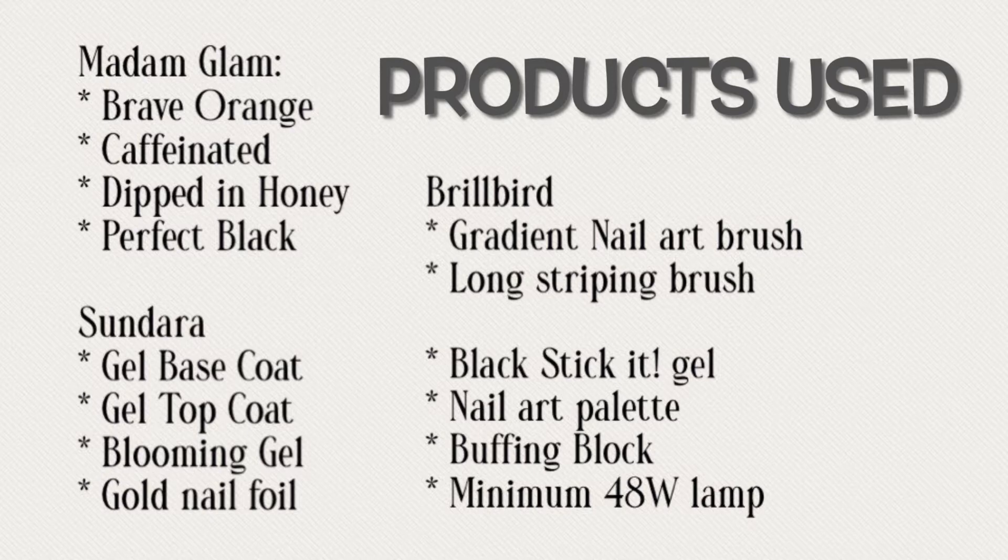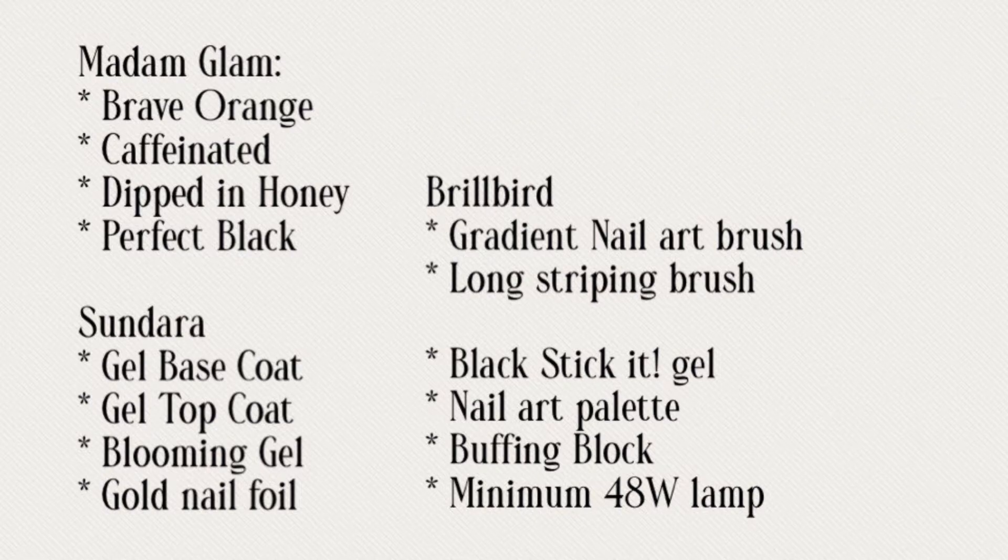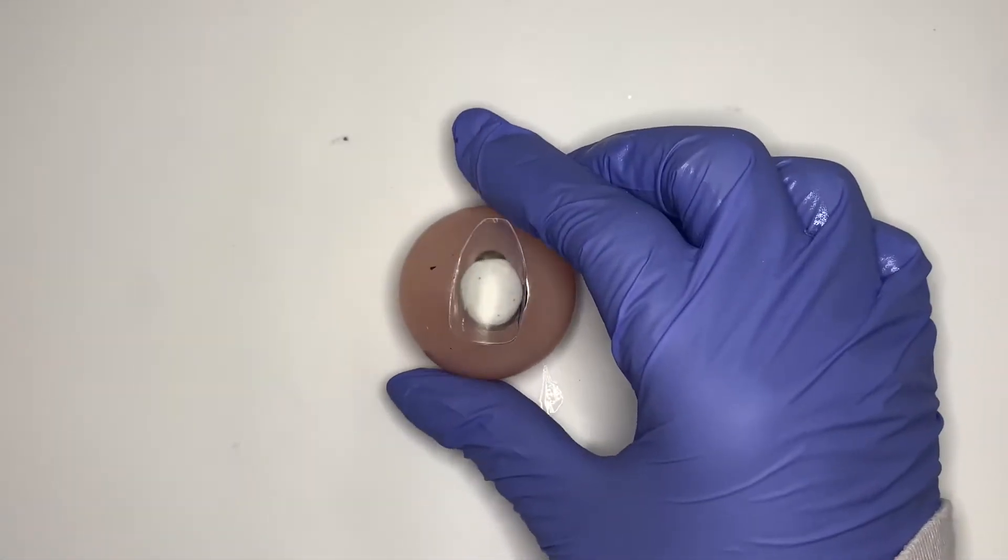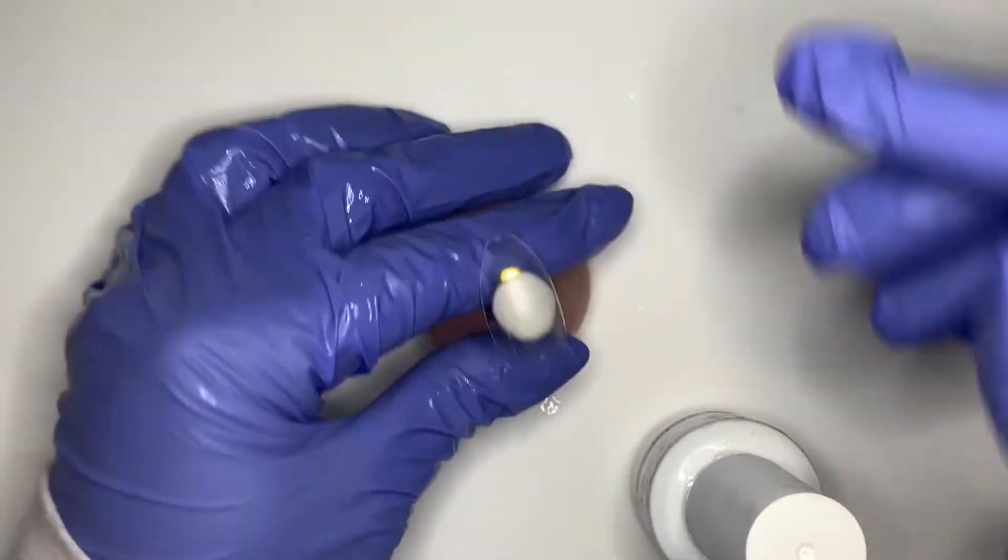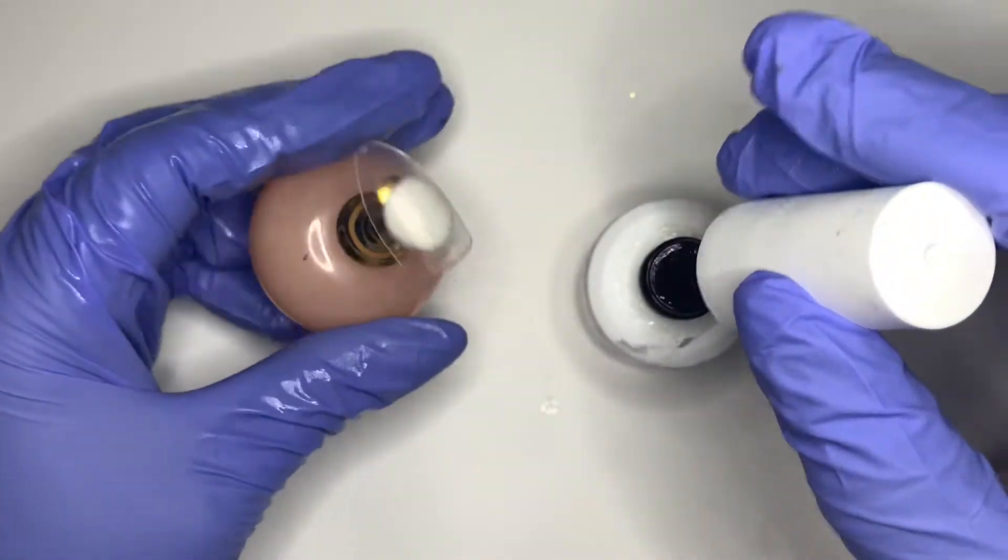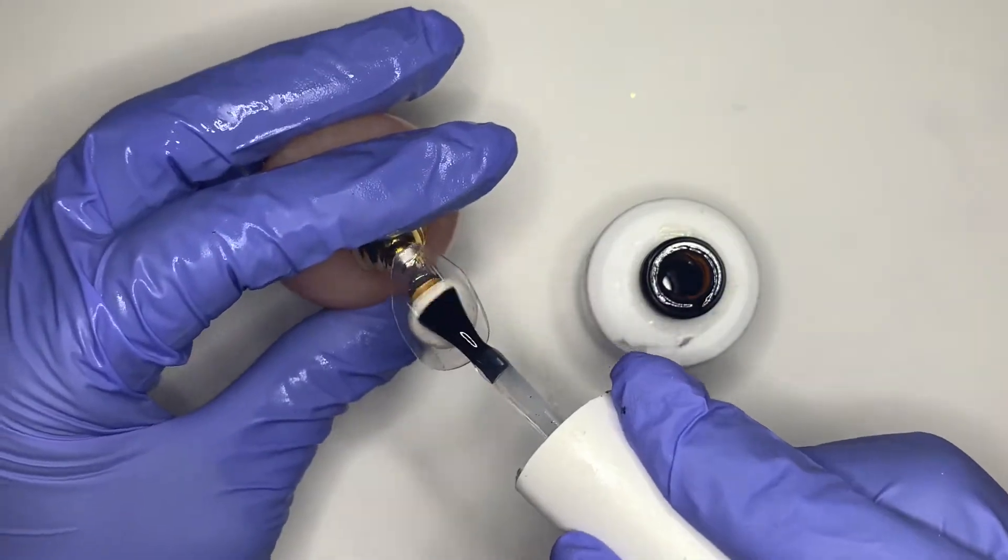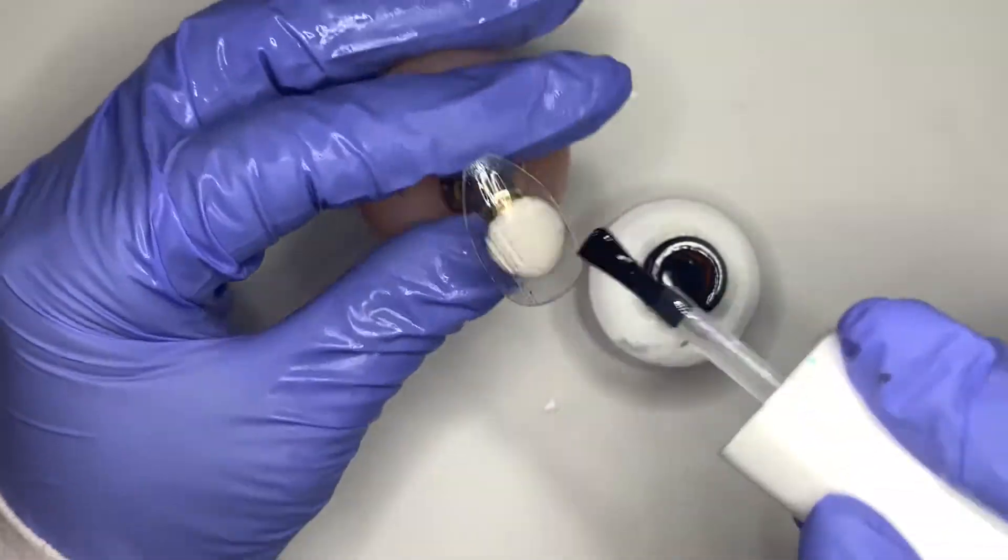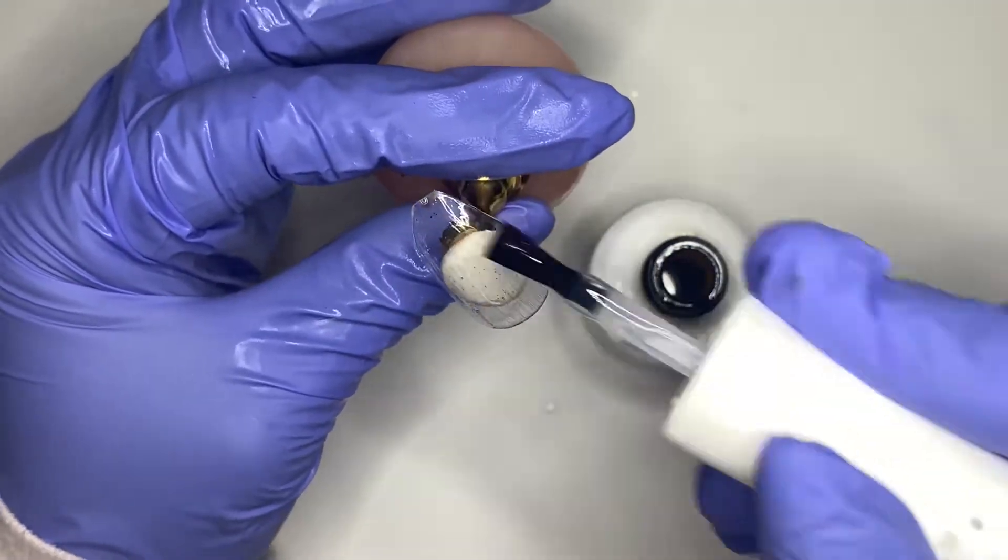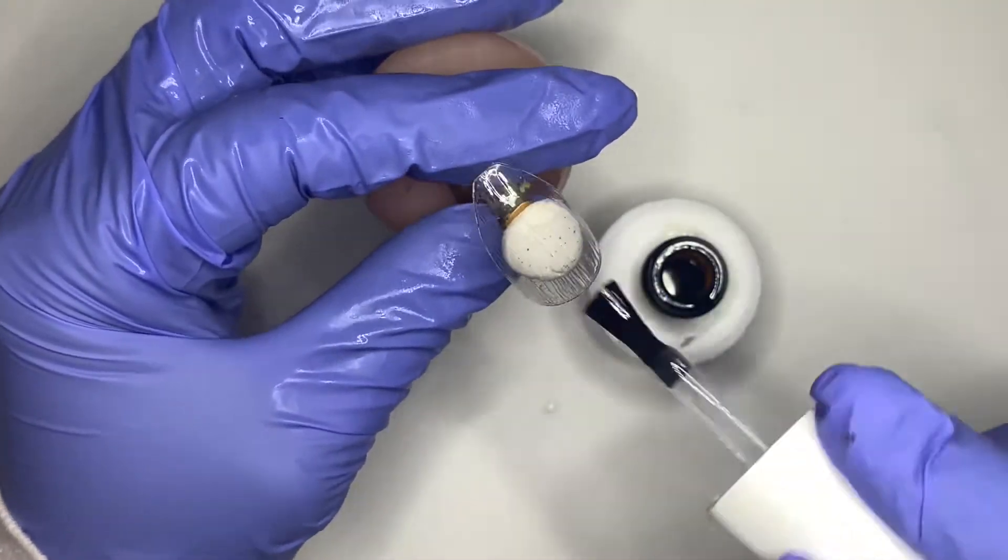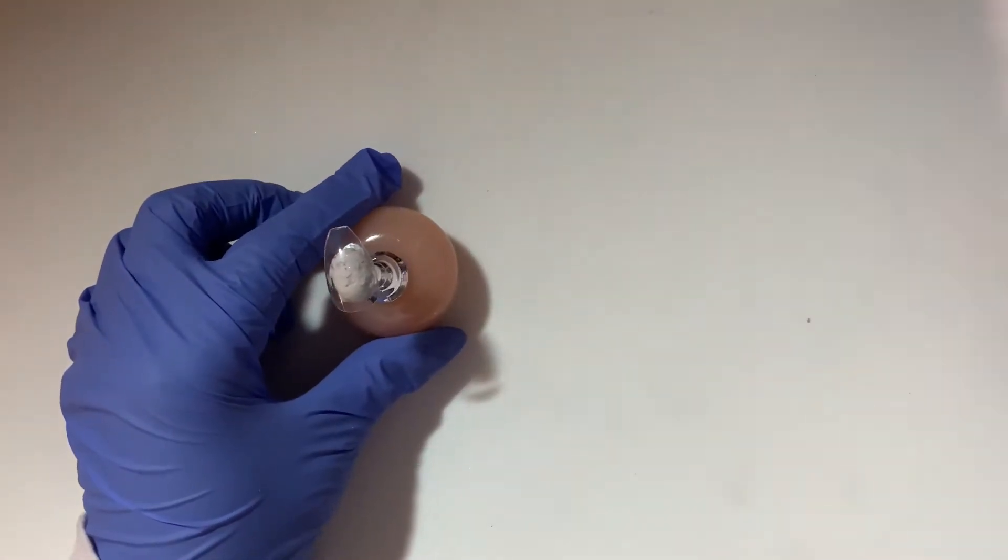We're going to start off with applying a base coat. Once you have that done, pop it in the UV lamp for 30 seconds.